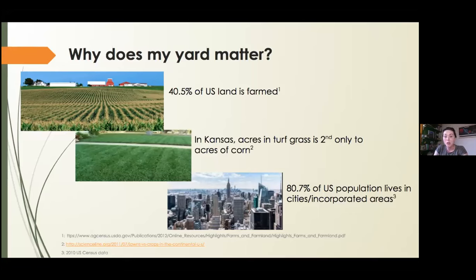In Kansas alone, turf grass is one of the most irrigated crops we have. In acreage, it is second to corn — about 150,000 acres of lawn and turf. Turf grass doesn't really provide habitat, doesn't do a lot for the soil, doesn't help with carbon sequestration, and doesn't hold much storm water. It's just kind of a green carpet, and that is potentially a lot of wasted space.